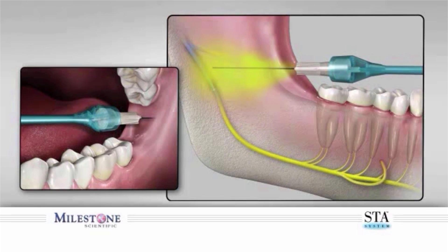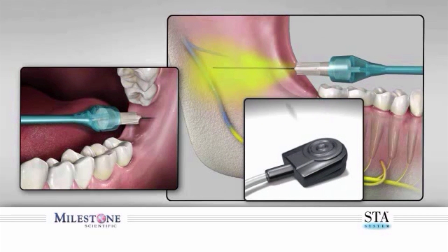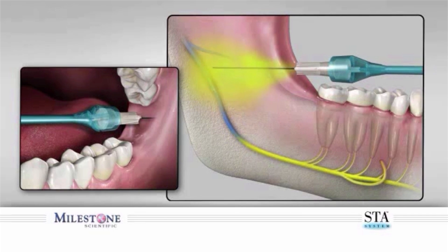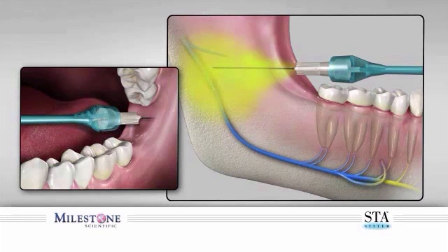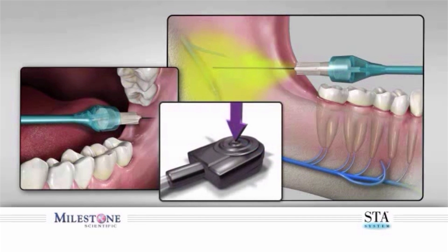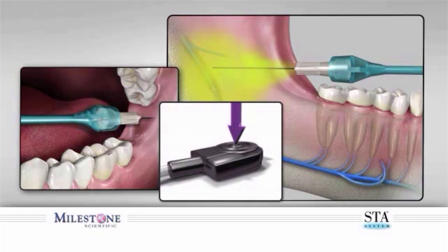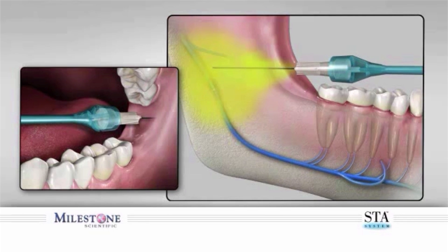Once you are at your target site, perform an aspiration by depressing and releasing the foot control. If the aspiration is negative, continue the injection. If aspiration is positive, reposition the needle and repeat aspiration by depressing and releasing the foot control pedal again until a negative aspiration is obtained. Continue the injection by depressing the foot control pedal. It is recommended that the first quarter of the cartridge be dispensed using the controlled flow rate before transitioning to the rapid flow rate, which is used only after your patient has acknowledged soft tissue anesthesia of the area being injected.